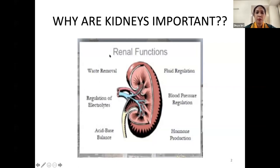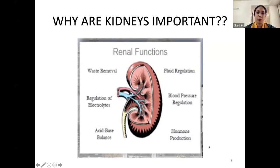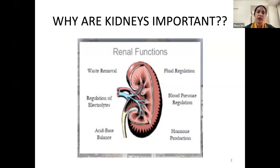The kidney is responsible for waste removal from the body. It regulates fluid, electrolytes, and the acid-base balance. In addition, it has an important role in the control of blood pressure through the renin-angiotensin pathway, and certain hormone productions like erythropoietin, which is responsible for the production of red blood cells. The kidney therefore plays many vital roles.